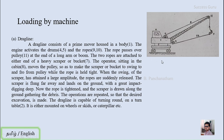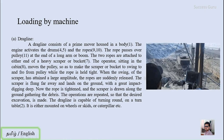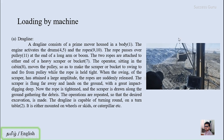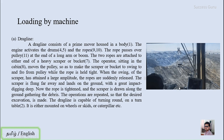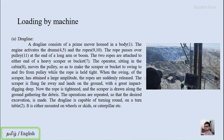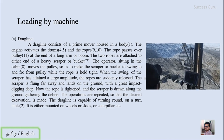The movement of the dragline depends on the location where you are going to mine. You can use wheels, skids, or a caterpillar track. This is the actual machine. The operator works from the cabin and controls the machine accordingly. This is how the dragline works.